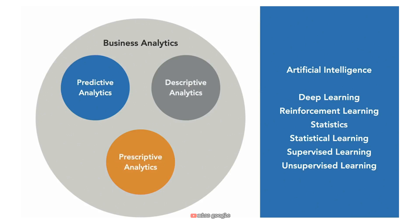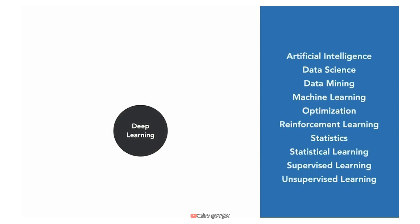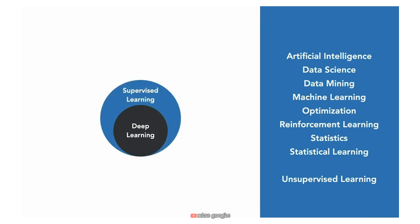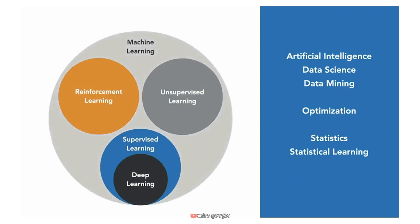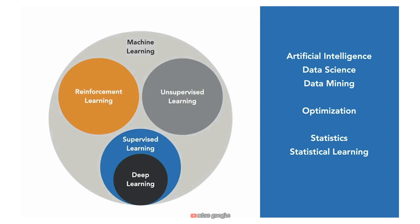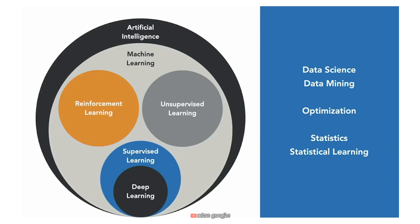We use descriptive analytics to track and analyze existing data in order to identify new patterns. We use predictive analytics to analyze past trends in order to predict the likelihood of future outcomes. And we use prescriptive analytics to recommend actions based on prior performance. Deep learning is one of many machine learning approaches that fall under the umbrella of supervised machine learning. Supervised learning, along with reinforcement learning and unsupervised learning, make up the three major branches of machine learning. Though the terms are often used interchangeably, machine learning is a subfield in artificial intelligence — all machine learning is AI, but not all AI is machine learning.